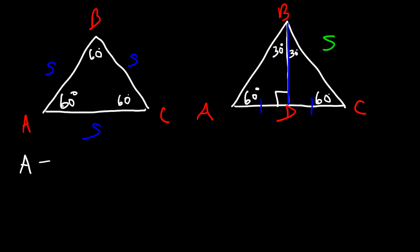In order to calculate the area of a triangle, it's one half base times height. Now we already have the base. The length of the base is AC, which is S. What we need to find is the length of BD, which is H. Now how can we do that? Well, let's focus on the 30, 60, 90 triangle.